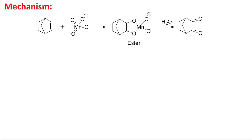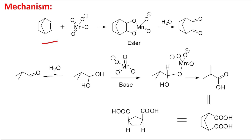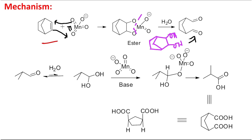This is the first part of the mechanism for diol formation — how this reaction happens. In the first step, the manganese reacts with this double bond and produces a cyclic intermediate, which I'll call A*. This A* undergoes hydrolysis and produces the corresponding diol. So it actually produces the corresponding di-alcohol, which further oxidizes.